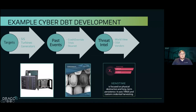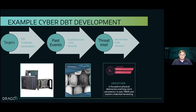Here's a quick example. We have targets at our facility: a safety instrumentation system, turbines, and backup generators. We have to ask relevant questions — what past events have happened involving these systems, who targets our industry, and if they do target our systems, what TTPs would they use? The safety instrumentation system, or SIS, was targeted by Xenotime in 2017; they developed the TRISIS malware specifically designed to attack it. We can then use intelligence feeds to obtain the TTPs that Xenotime uses and put that all together to create a cyber DBT.